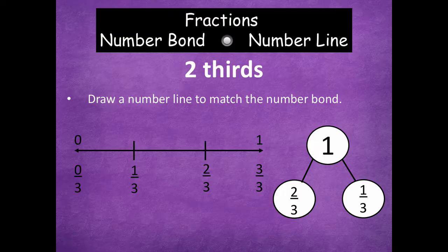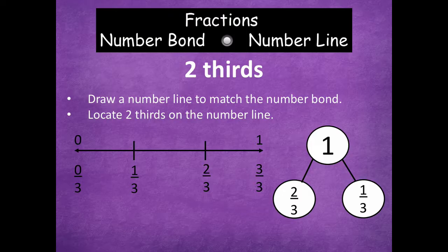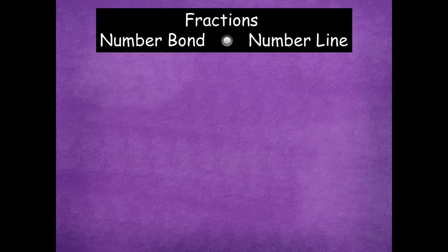Now we're going to locate two-thirds on the number line. Slide your finger: zero-thirds, one-third, two-thirds. There's where two-thirds would be represented on a number line.